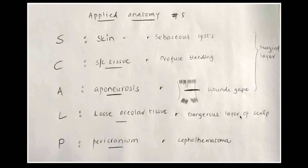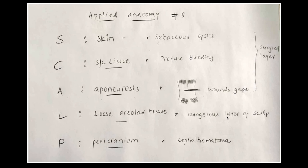The fourth layer, loose areolar tissue, allows inflammation, pus, or fluid to spread easily. It contains multiple emissary veins communicating the intracranial venous sinuses with the scalp soft tissue, so infection can enter the intracranial sinuses — making this the dangerous layer of the scalp. Blood or fluid spreading through this layer can reach around the eyelid, discoloring it brownish-black, a condition termed black eye.